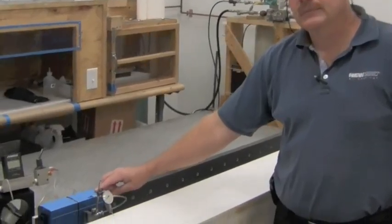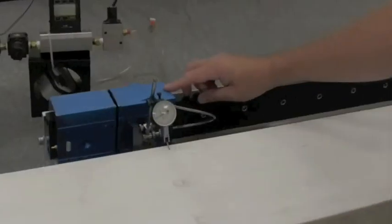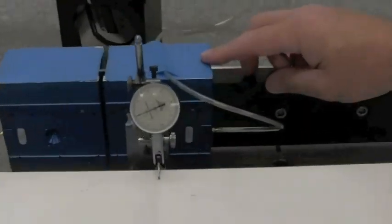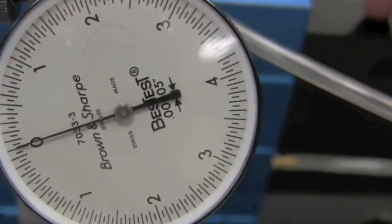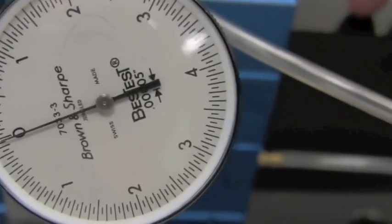We're going to measure the straightness of motion in the vertical direction. You can see the tenth indicator with 50 millionth divisions. Zero it out.